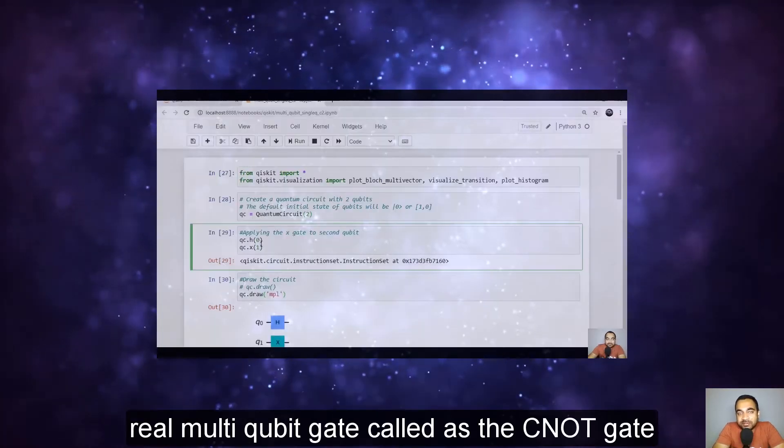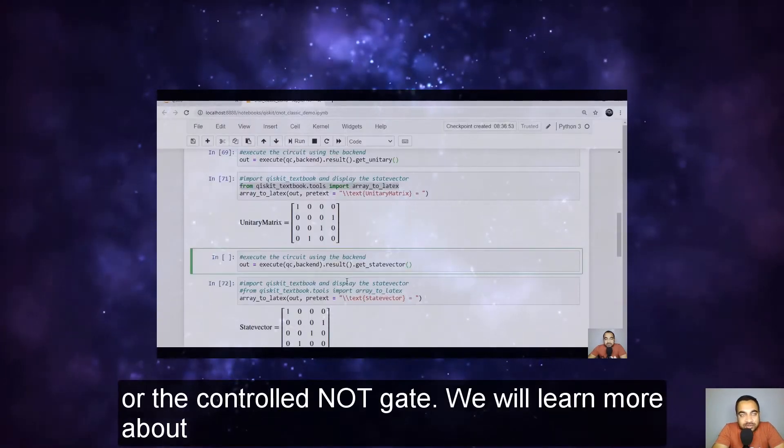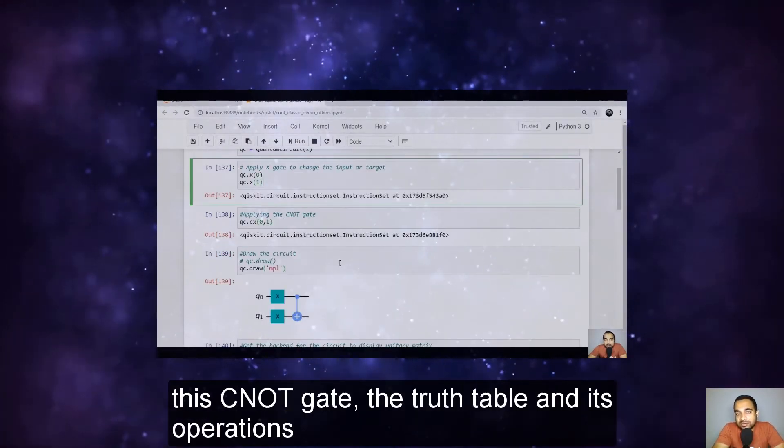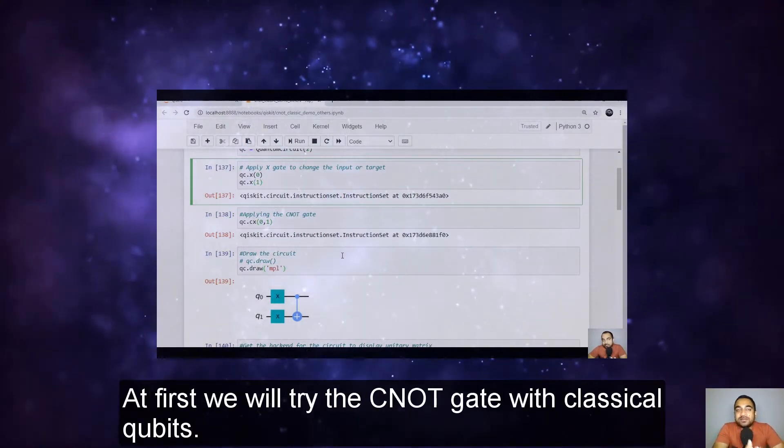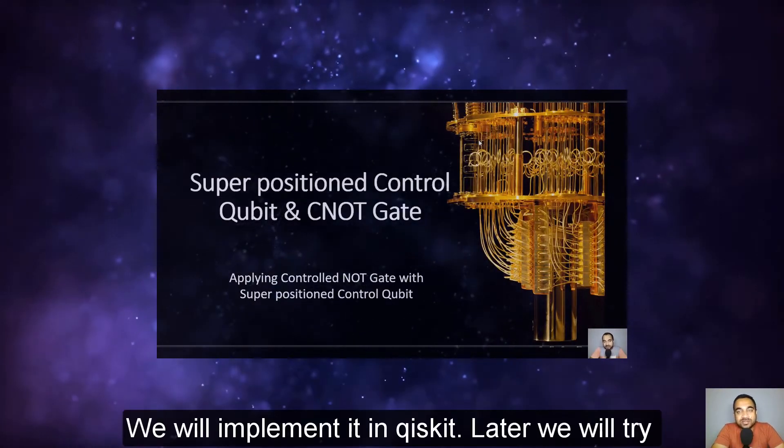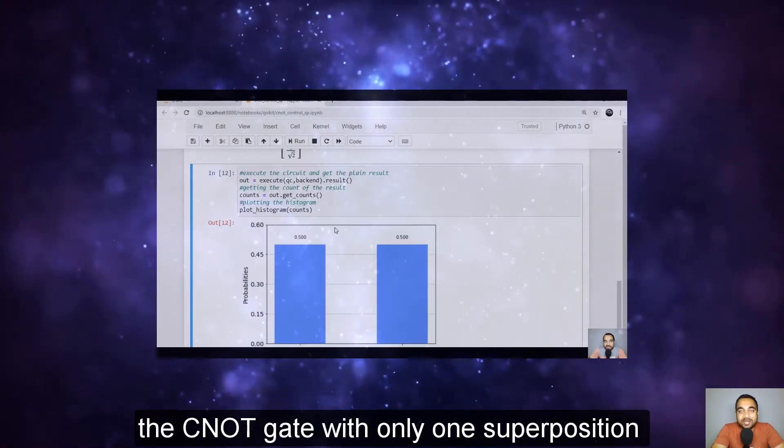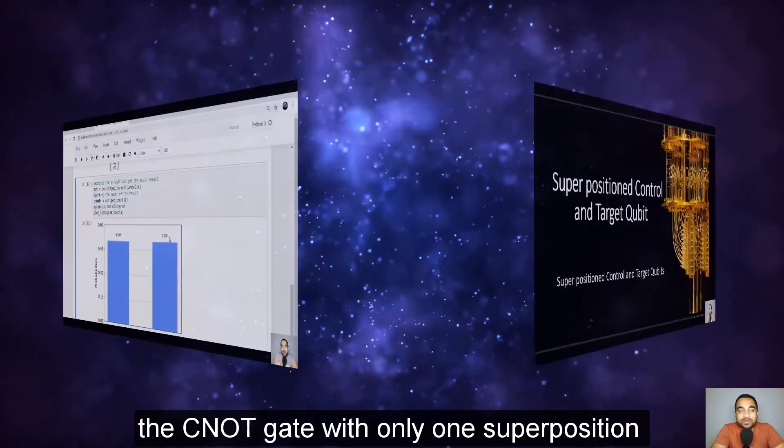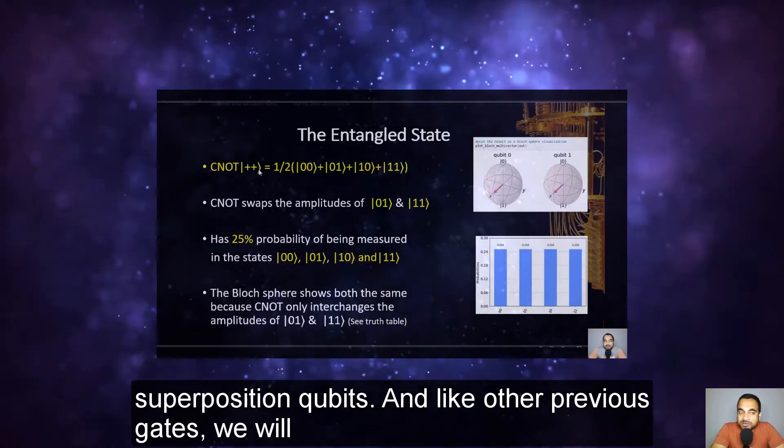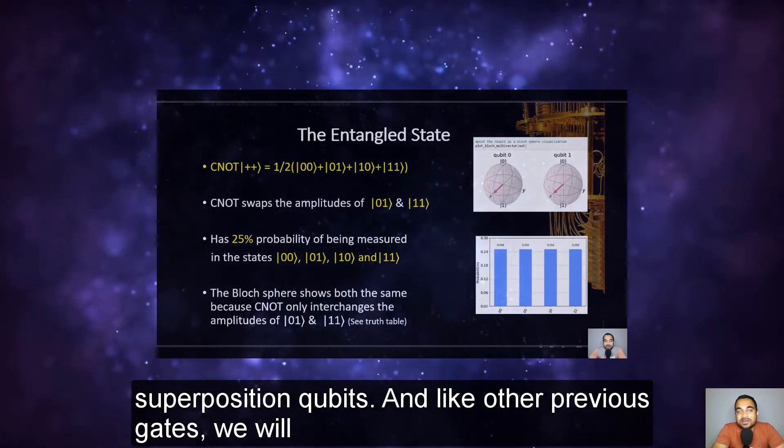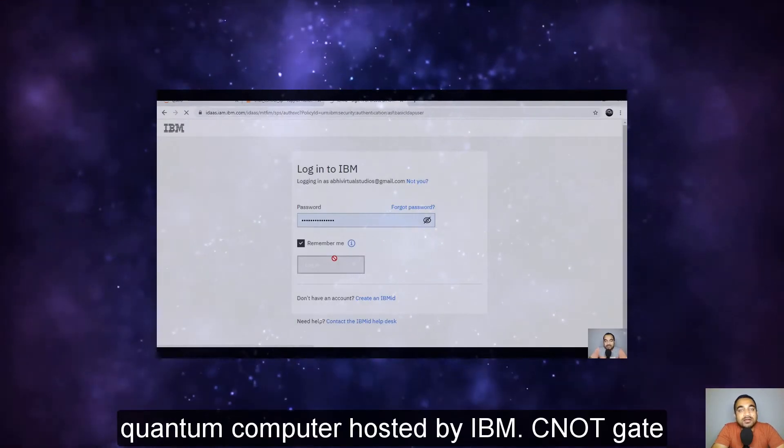And then we will proceed with a real multi-qubit gate called the CNOT gate or the controlled NOT gate. We will learn more about this CNOT gate, the truth table and its operations. At first we will try the CNOT gate with classical qubits. We will implement it in Qiskit. Later we will try the CNOT gate with only one superposition qubit. And afterwards we will try with both superposition qubits.